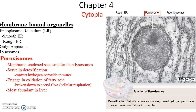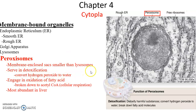Moving on to peroxisomes — like lysosomes, peroxisomes are modified vesicles, but they seem to be a little smaller. Peroxisomes are filled with enzymes involved in detoxification, specifically neutralizing dangerous waste byproducts such as hydrogen peroxide that the cell produces through metabolic processes, breaking it down into water. They also engage in oxidation of fatty acids, breaking them down into acetyl coenzyme A that can enter cellular respiration. Peroxisomes are found in higher concentrations in the liver, where lots of detoxification occurs.